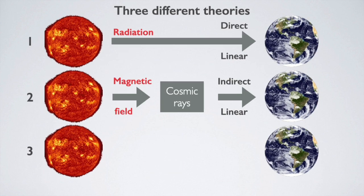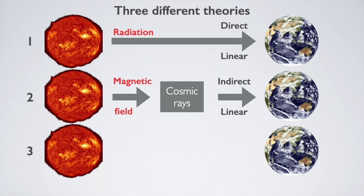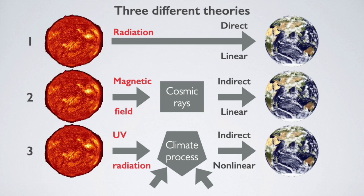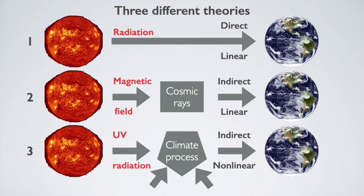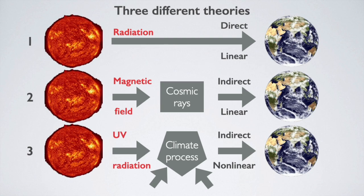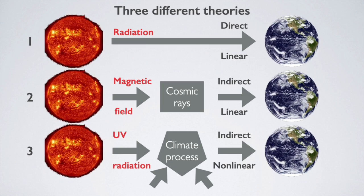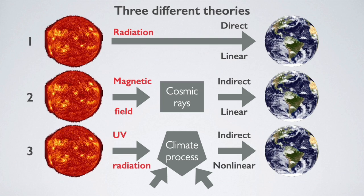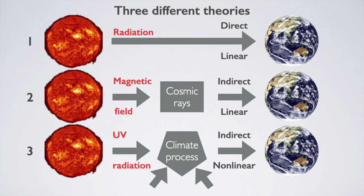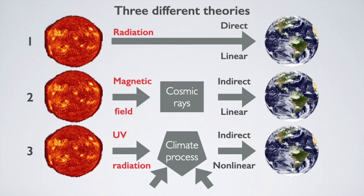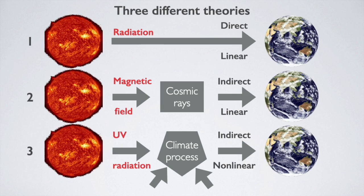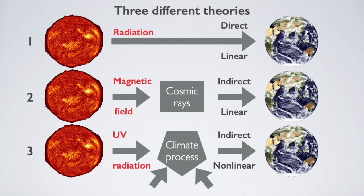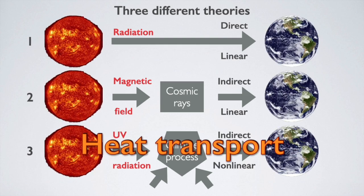The third theory is the one I have proposed. In it, the sun is not indispensable to natural climate change. There is a poorly understood climate process that is affected by the sun, but also by several other factors. Changes in this process cause changes in the climate. The sun acts indirectly on the climate, and its effect is non-linear because other factors are involved. Non-linear means that the effect is not proportional to the cause. This explains why there is no direct correlation between the sun and surface temperatures — nor should there be — although the sun's effect is important. This process is heat transport.